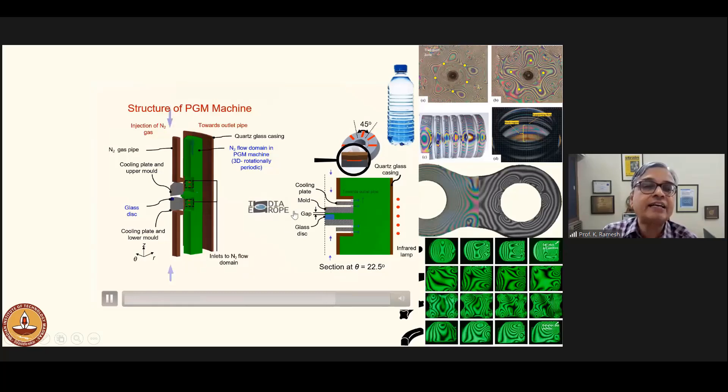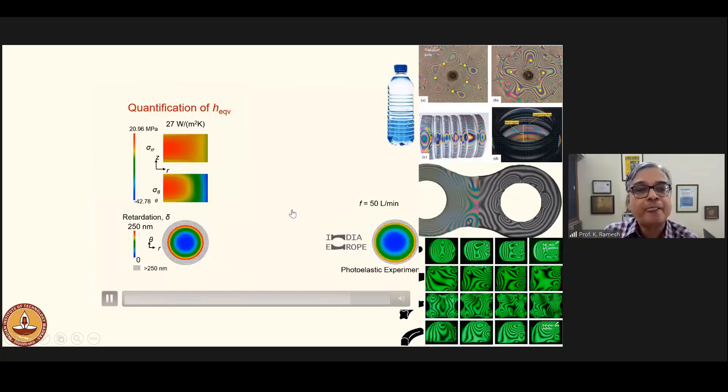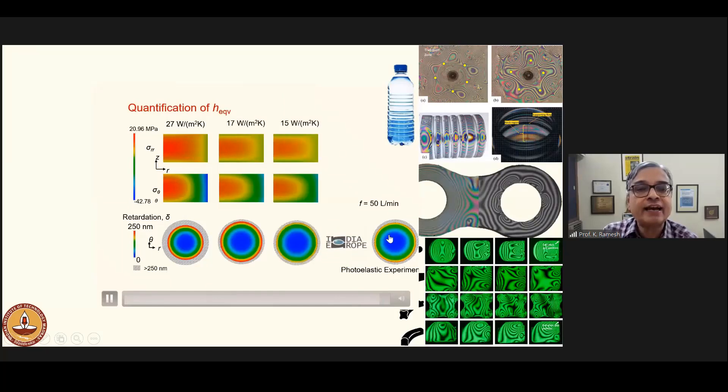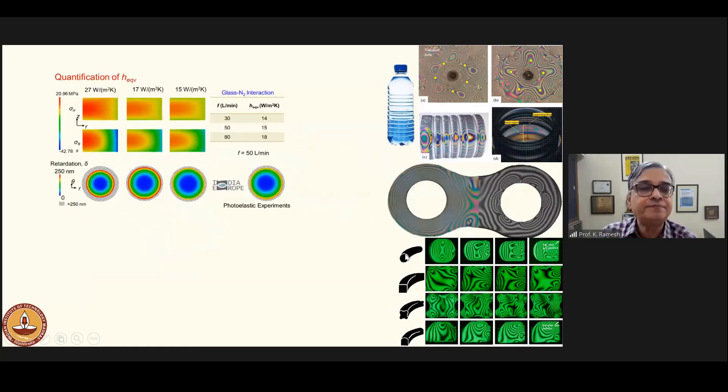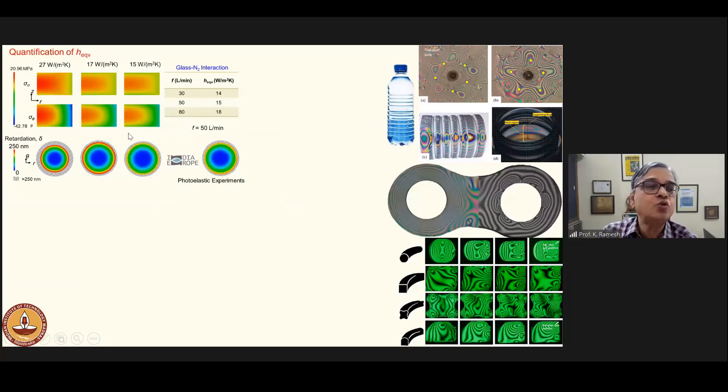Heat transfer data is not possible to obtain. What is done here is the finished product is analyzed for residual retardation. This information is used to tweak the heat transfer properties such that the results match with the experiment. In fact, it is a very innovative approach, a game changer in precision glass molding.